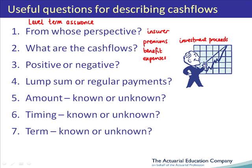The next cash flow to consider is the benefit. Pause the recording while you think through the answers to questions 3 to 7 for a typical level term assurance that offers a lump sum benefit on death. The benefit represents a negative cash flow to the insurer. It's the lump sum, payable on death. The amount of the lump sum benefit is usually known. Term assurance is often written on a without-profits basis. The timing of the benefit is unknown since the date of death is unknown. For a lump sum cash flow, it doesn't really make sense to talk about its term. It would also be sensible to point out that no benefit may be payable at all if the policyholder survives to the end of the term or withdraws early.